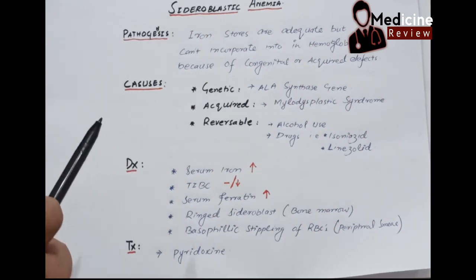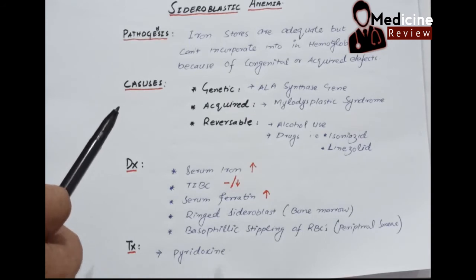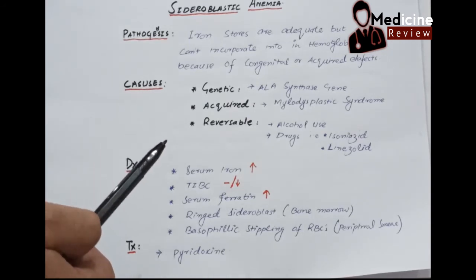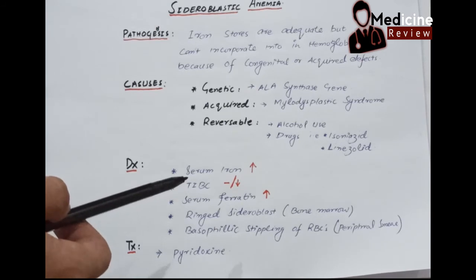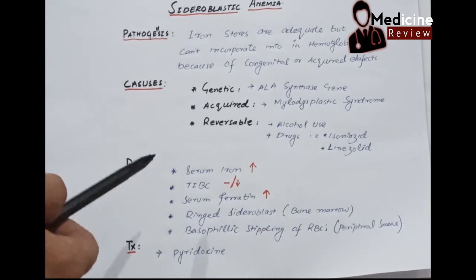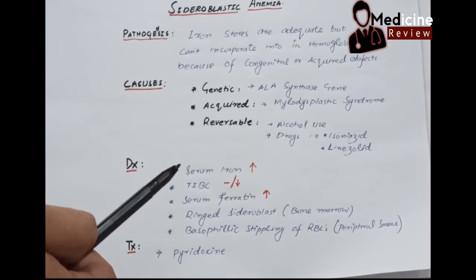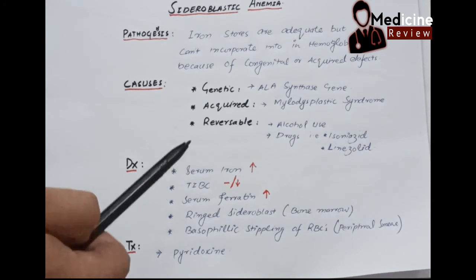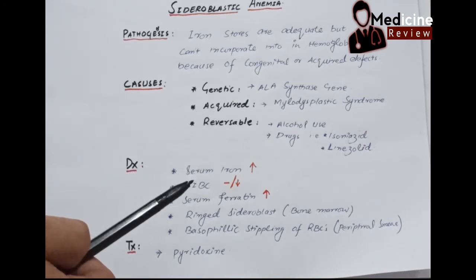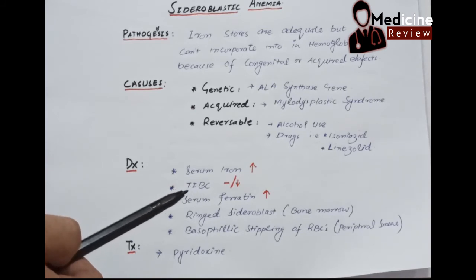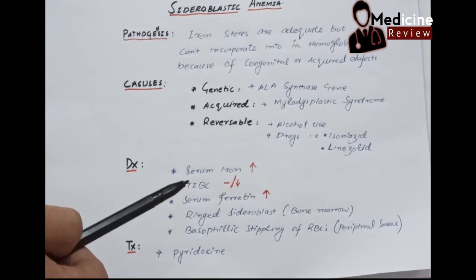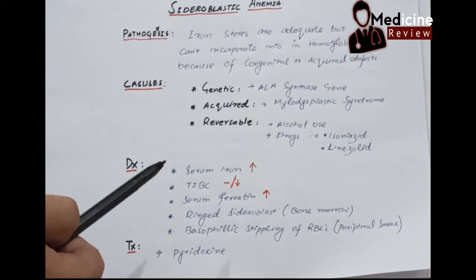The diagnosis is important in sideroblastic anemia. If we go through the iron studies, the serum iron level will be even increased. The TIBC will be either normal or decreased. Serum ferritin is increased. In general, the total iron stores or total iron level in the body is normal or increased, but the main pathogenesis is the iron cannot be incorporated in the hemoglobin, which leads to sideroblastic anemia.